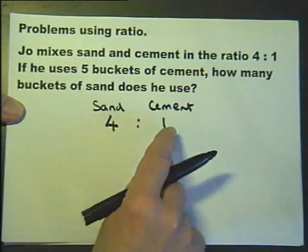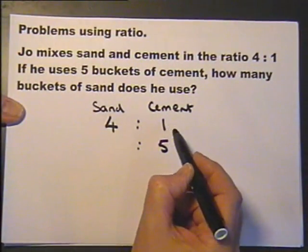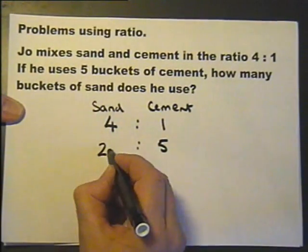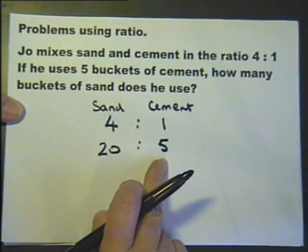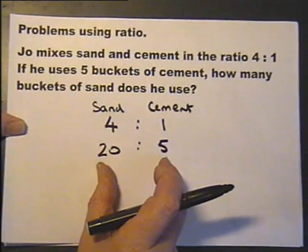5 buckets of cement, so that goes underneath there. I think it's quite obvious that that's 5 times 1, so that's 5 times 4, so that's 20. So that's the ratio of 20 to 5, which is the same as 4 to 1, which is the ratio of the cements that are going to be mixed.